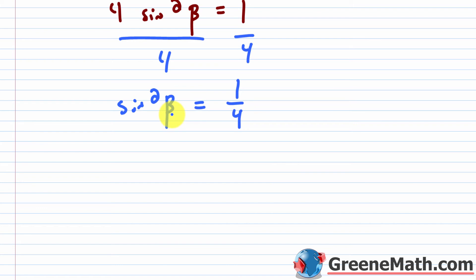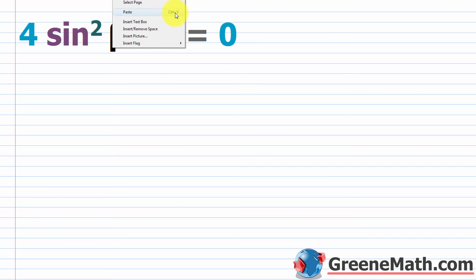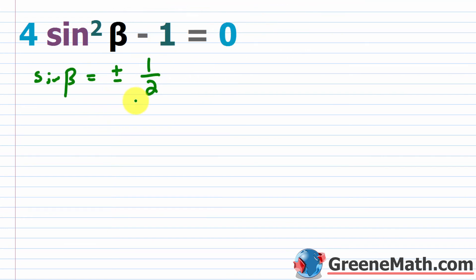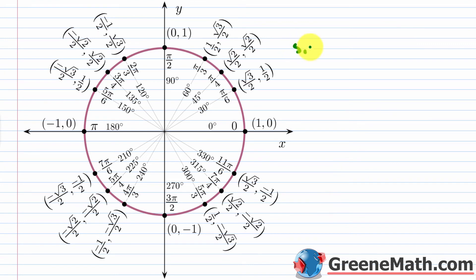Since the expression is squared, take the square root of each side. On the right, use plus or minus. So sine of beta equals plus or minus the square root of 1/4, which simplifies to plus or minus 1/2. This gives two scenarios: sine of beta equals 1/2, or sine of beta equals negative 1/2.